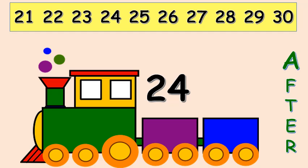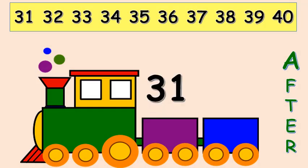Here we have the number twenty-four. Can you find which number comes after twenty-four? Yes, it's twenty-five that comes after twenty-four. Here we have number thirty-one. Can you find which number comes after thirty-one? Yes, it's thirty-two that comes after thirty-one.